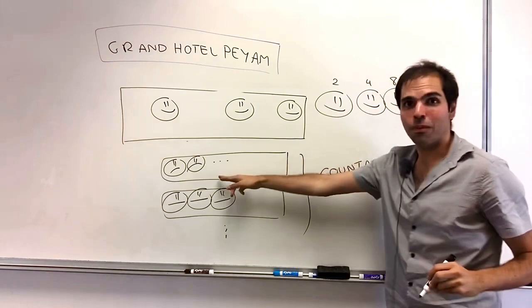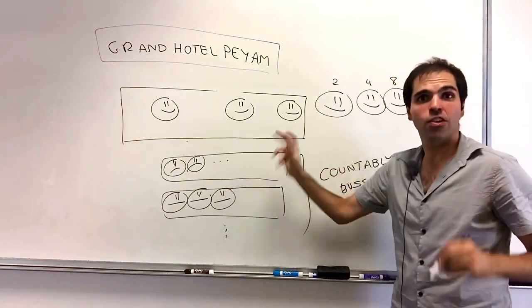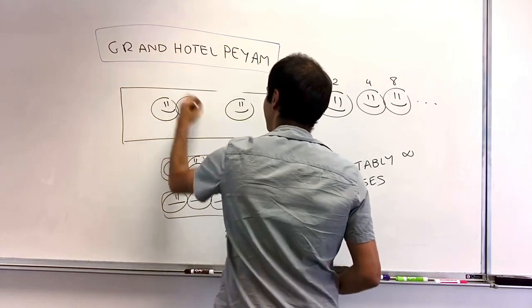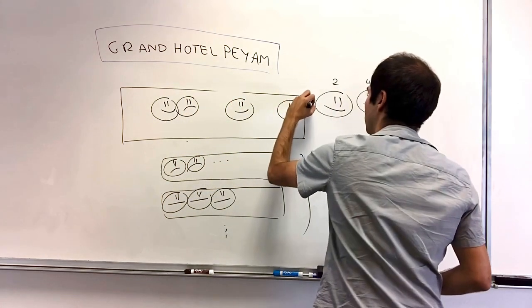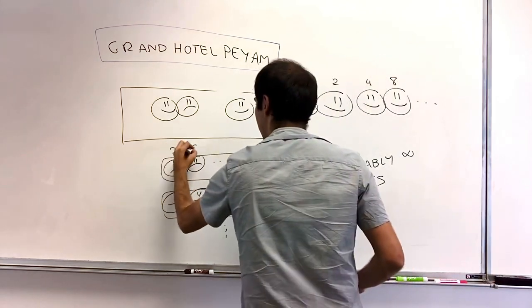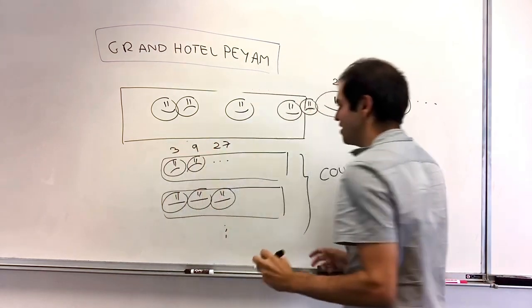For the first bus, put them in rooms that are powers of three. So this one goes in room three, this one goes in room nine, like a sad passenger, group nine. So three, nine, twenty-seven, et cetera.